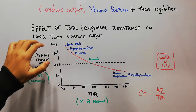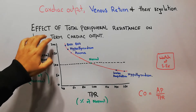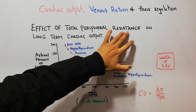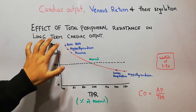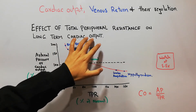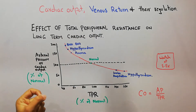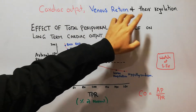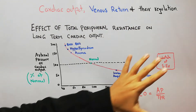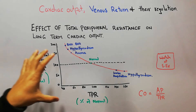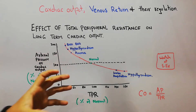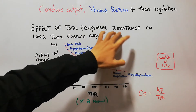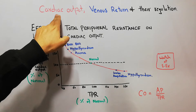Today in this lecture we are going to focus on the effect of total peripheral resistance on long-term cardiac output. We have started our new chapter about cardiac output, venous return, and their regulation. So today we are going to discuss the effect of total peripheral resistance on cardiac output.